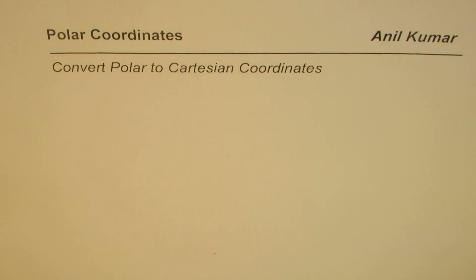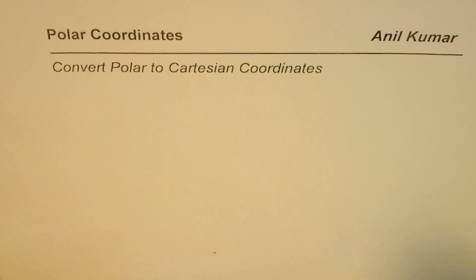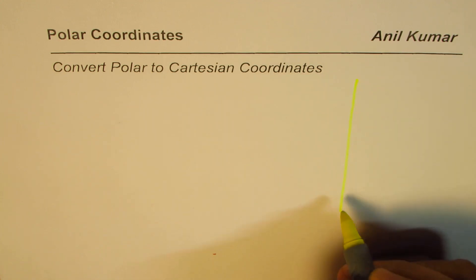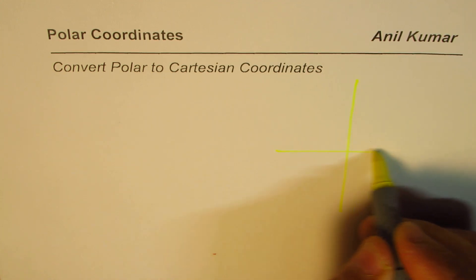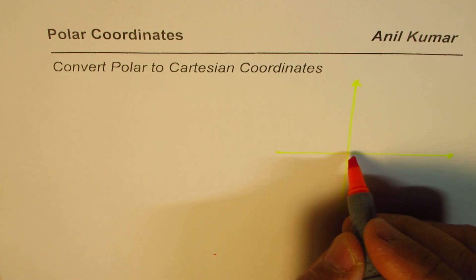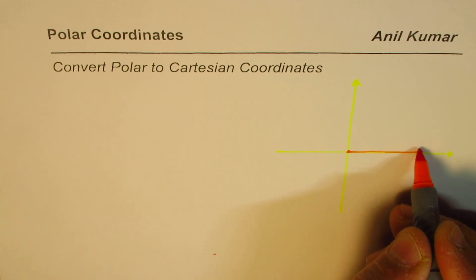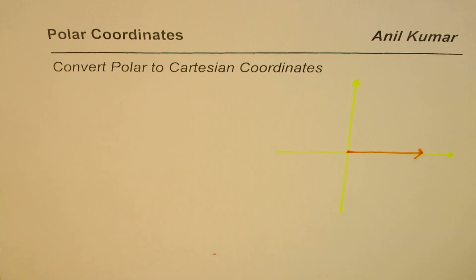I'm Anil Kumar and in this video we'll understand the basic concept to convert from polar to Cartesian system. Let me sketch our polar system and let me plot a point on it. In a polar system we have a pole and the initial arm is the polar axis.